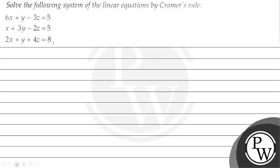Let us read the question. The question says: solve the following system of linear equations by Cramer's rule. 6x plus y minus 3z is equal to 5. x plus 3y minus 2z is equal to 5. 2x plus y plus 4z is equal to 8.